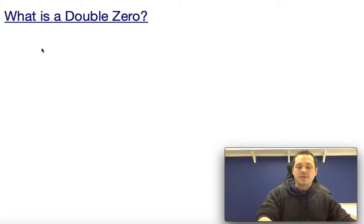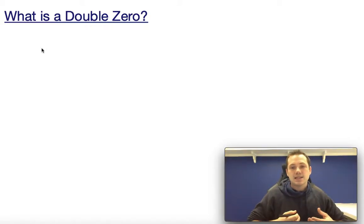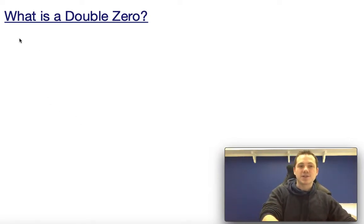All a double zero is, remember zero is a solution, it's a value of x that makes the equation true when y is equal to zero. And a double zero is a value that kind of does that twice. The easiest way to show you this is an example.